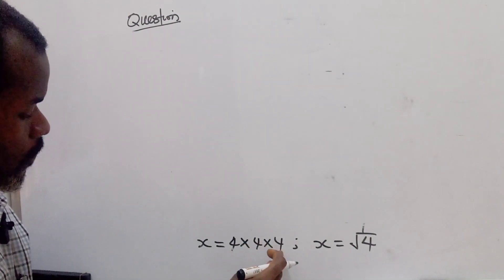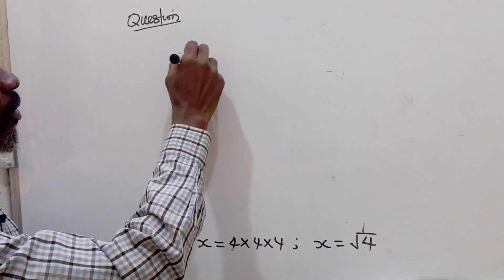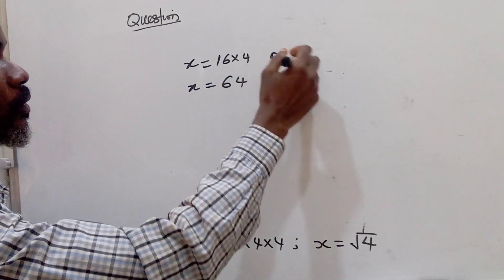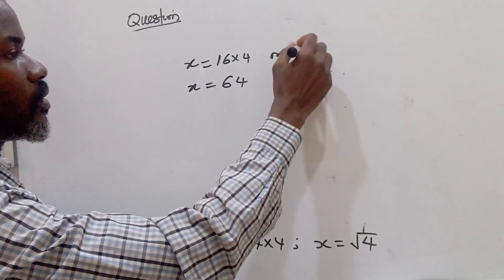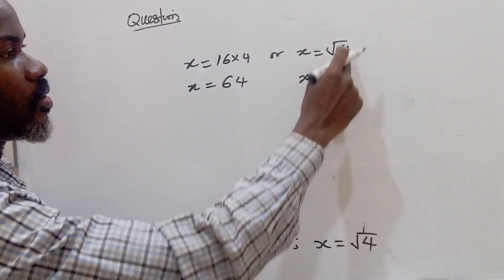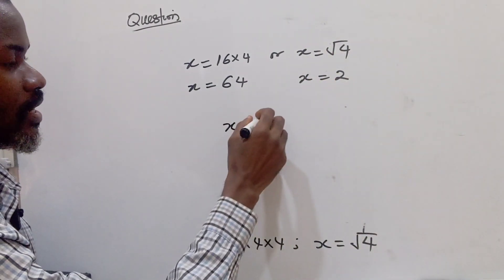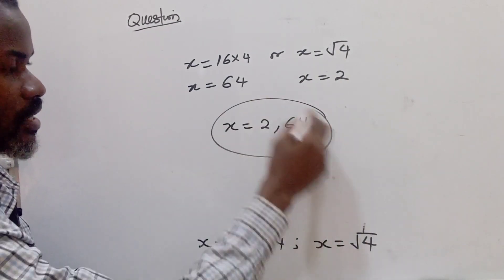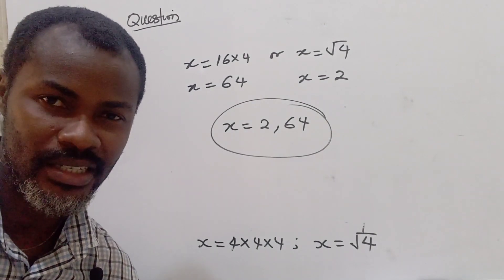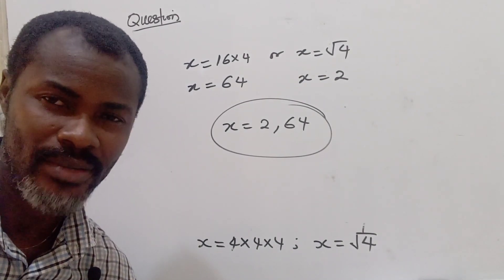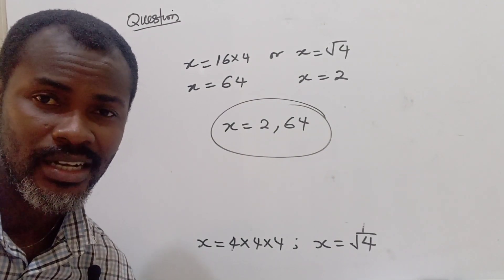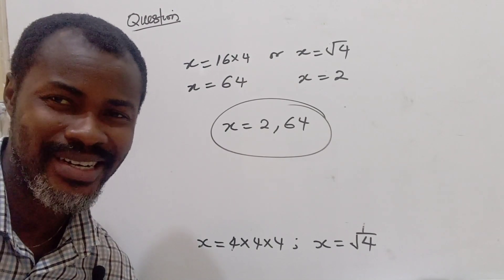4 × 4 × 4 = 64, so x = 64. And the square root of 4 is 2, so x = 2. The two solutions to this problem are x = 64 and x = 2. Thank you for watching. Make sure to like, subscribe, share the video with your friends, and leave a comment. See you next time!